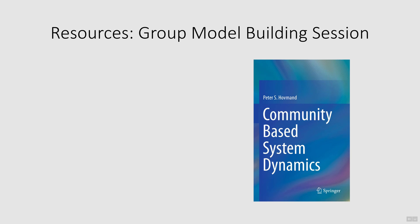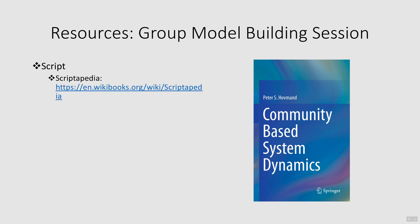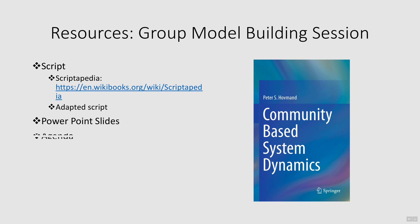We use Peter Hoffman's book, shown here, as a guide for our session. The link to the book is included in the resources section of the training kit. Also in the resources section is a link to Scriptopedia, a website containing scripts used by other groups to do group model building. We adapted the scripts from Scriptopedia to meet our needs, and we've included our adapted script, the PowerPoint slides, agenda, and results from the case study session, and some additional reading in the resources section.